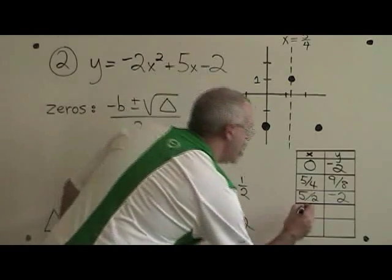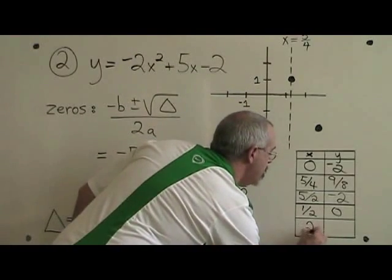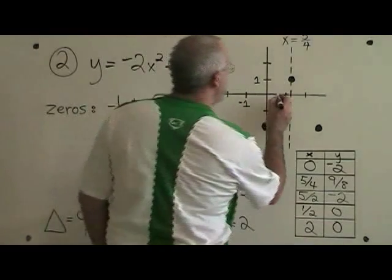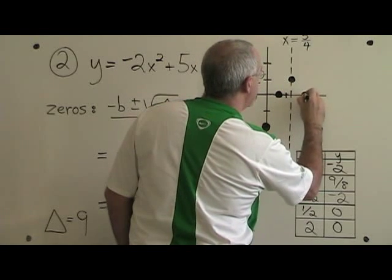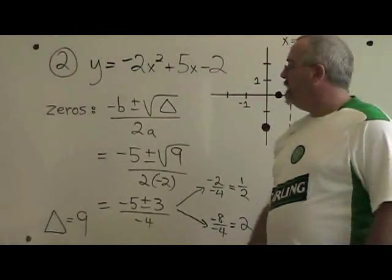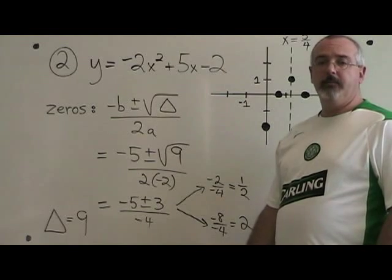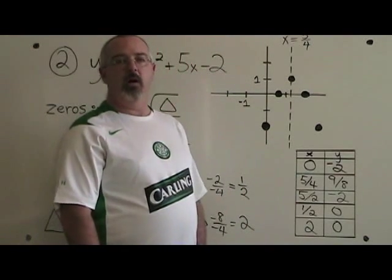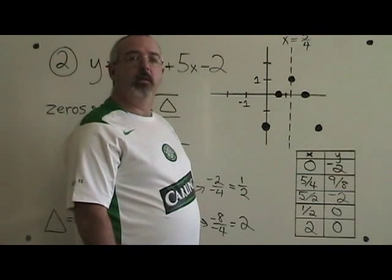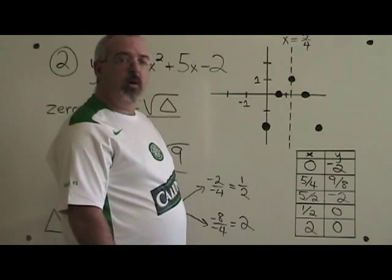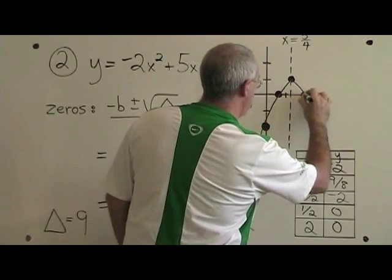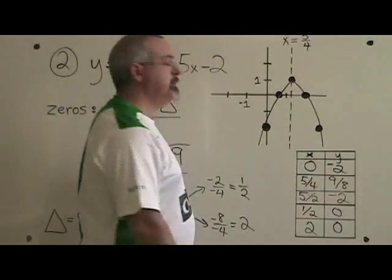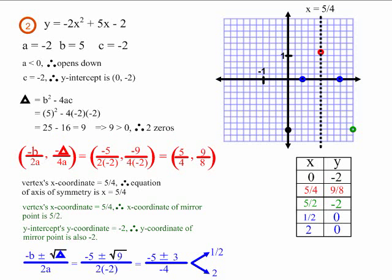Our x-intercepts are one half, 0 and 2, 0. Let's put them on the graph. One half, 0 is right here. And 2, 0 is right here. This is how you find zeros of your parabola. Let's draw our curve. Make sure that you draw a parabola with curved lines and not straight lines, because the drawing is usually worth marks. This is what example 2 looks like after we have found our two roots.